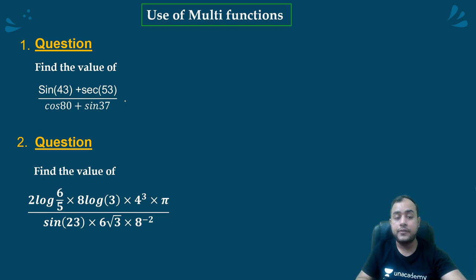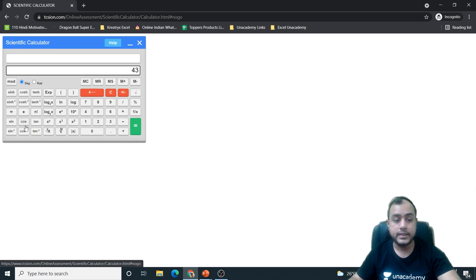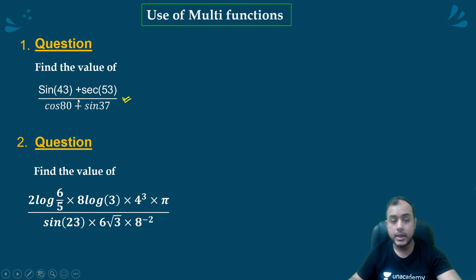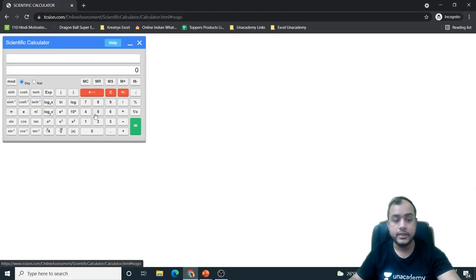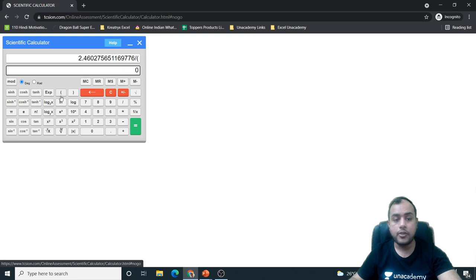Now, let's use multiple functions. Sin 43 plus sec 53 by cos 80 plus sin 37. This is actually quite simple. What I will do? I will clear. I will press 43, sin 43 plus sec 53. Let me clear it. First, I will do 1 by 53 cos. Sec 53 is 1 by cos 53. 1.601 plus sin 53. 0.7986. You will press equal to. Divide it. Now form a bracket.